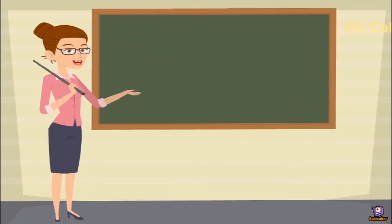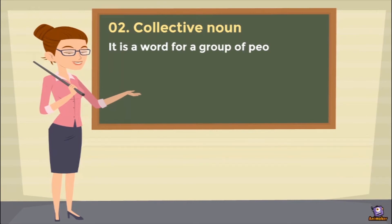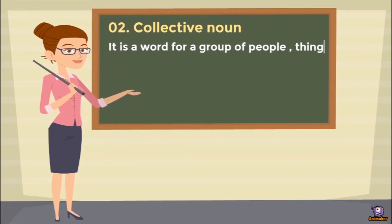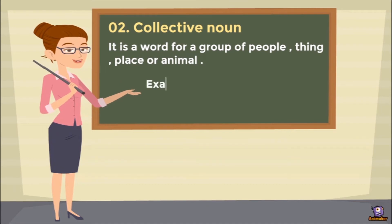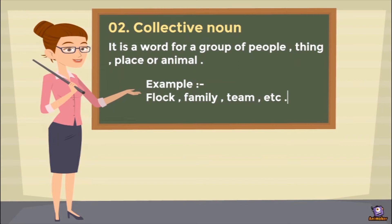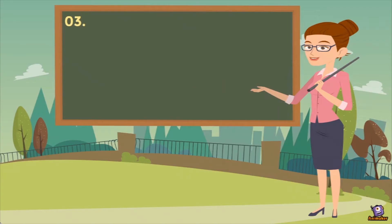Then we have the second type of noun: collective noun. It is a word for a group of people, things, places, or animals. Collective naam se hi aapko samajh mein aa raha hoga — collective matlab collection. So it is a group of people, or thing, or place, or animal. Examples can be flock, family, team. Team ek group hota hai, family bhi group hoti hai logon ka, parivaar ke janon ka. So it is known as collective noun.